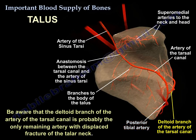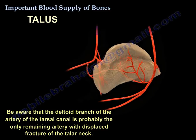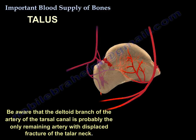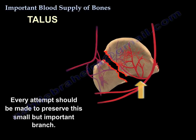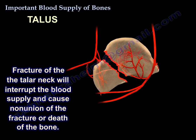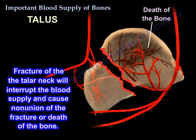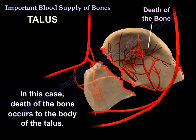The deltoid branch of the artery of the tarsal canal is probably the only remaining artery with displaced fractures of the talus neck. Every attempt should be made to preserve this small but important branch. Fracture of the talus neck will interrupt the blood supply and cause non-union or death of the body of the talus.